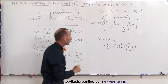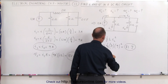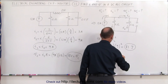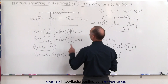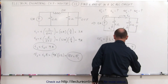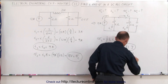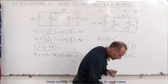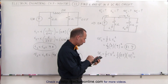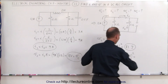What about the energy stored in the capacitor? That equals one half times the capacitance times the voltage squared — one half times one half farad times 18 squared. Using a calculator: 18 squared divided by 4 gives us 81 joules as well.